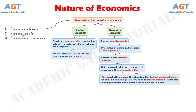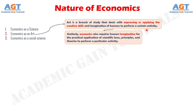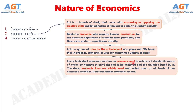Now let's move to the second nature of economics, where we see economics as an art. Art is a branch of study that deals with expressing or applying the creative skills and imagination of humans to perform a certain activity. Similarly, economics also requires human imagination for the practical application of scientific laws, principles, and theories to perform a particular activity. Art is a system of rules for the achievement of a given end. In practice, economics is used for achieving a variety of goals. Every individual economic unit has an economic goal to achieve, and it decides its course of action by keeping in mind the end to be achieved and the situation faced. Therefore, economic laws are widely used and relied upon at all levels of our economic activities, and that makes economics an art.